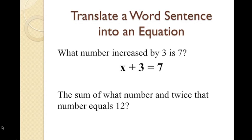Our next example is: the sum of what number and twice that number equals 12. So, we know by the sentence that we are going to add an unknown number with the same unknown number multiplied by 2 to get 12. Twice a number can be expressed as 2n. Therefore, we write it as n plus 2n equals 12.